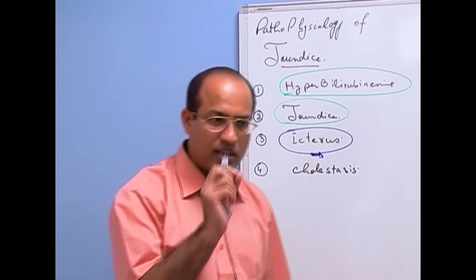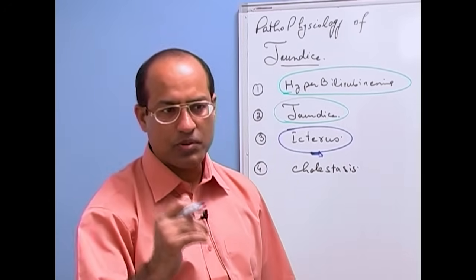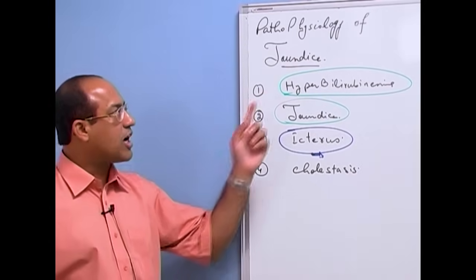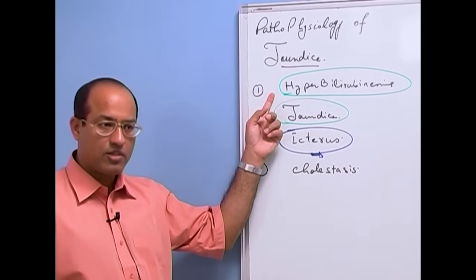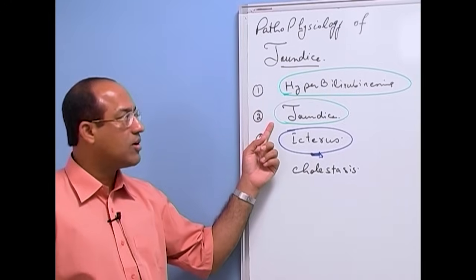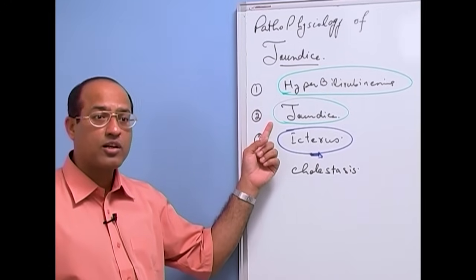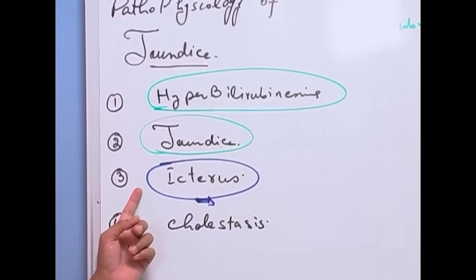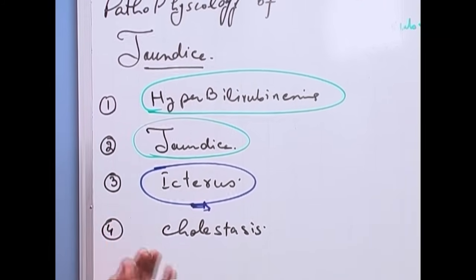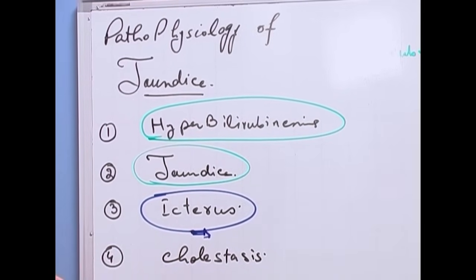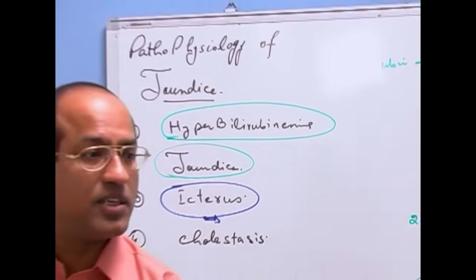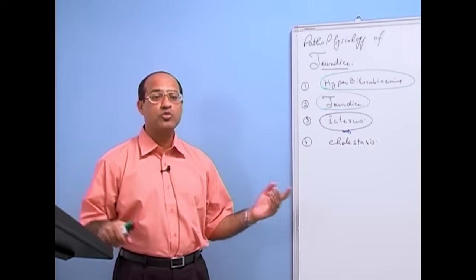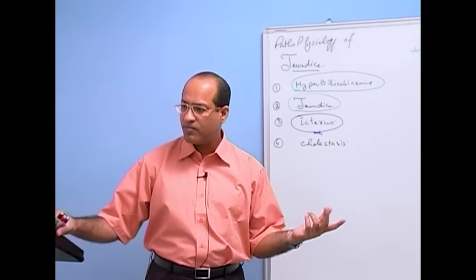If you are really watching and examining your patient serially, you can detect this early. To summarize: what is hyperbilirubinemia? When your bilirubin level is more than normal. What is jaundice? When hyperbilirubinemia leads to yellow coloration of skin, mucous membranes, sclera, and interstitial fluids. What is icterus? When we are specifically referring to yellow coloration of sclera due to hyperbilirubinemia. Because if there is yellow coloration of body tissue due to some other reason, that should not be considered jaundice.